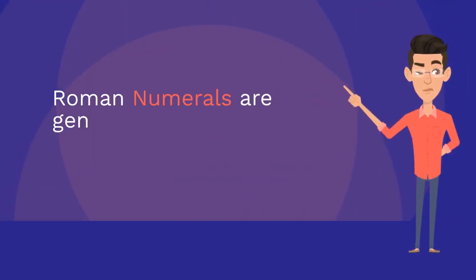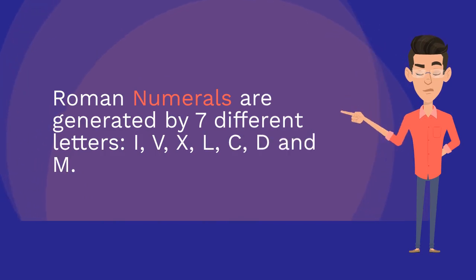Roman numerals are generated by seven different letters: I, V, X, L, C, D, and M.